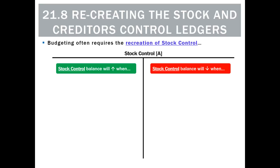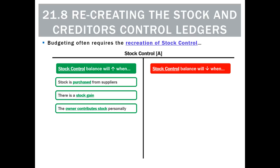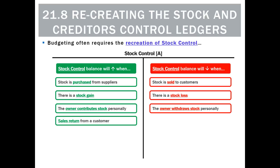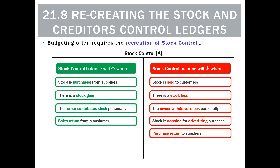To budget effectively it's very important we know all the things that could go in stock control. Stock control will go up when we buy stock, when there's a stock gain, when the owner contributes stock as a capital contribution, or when there's a sales return from a customer. Stock control will go down when we sell it, when there's a stock loss, when the owner takes it for personal drawings, when it's donated for advertising purposes, and if there's a purchase return.